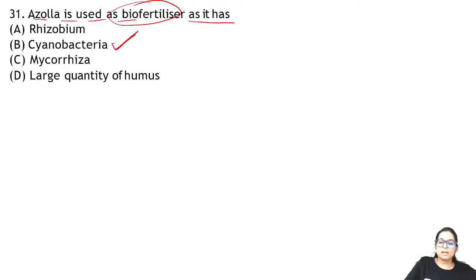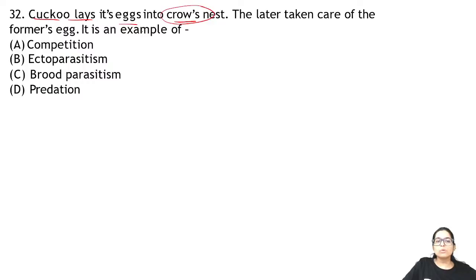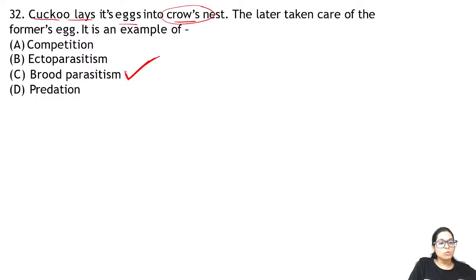Question 32: the cuckoo lays its eggs in the crow's nest, and the crow takes care of the cuckoo's eggs. This is an example of brood parasitism — producing your own eggs and getting others to care for them.